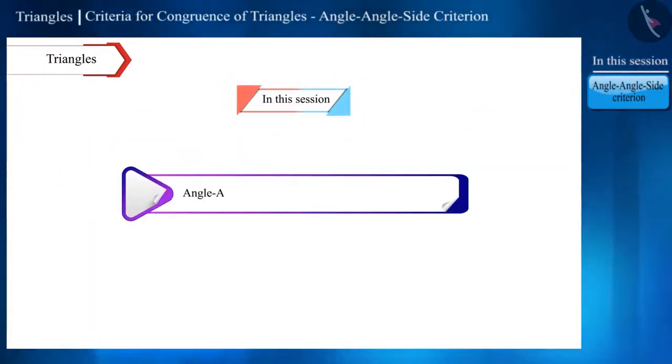Today, we will discuss the angle-angle-side AAS criterion for the congruence of triangles.